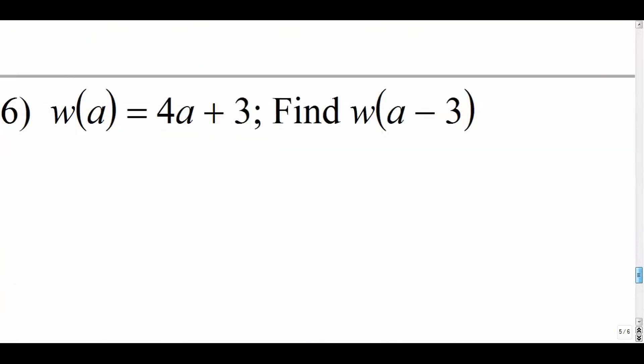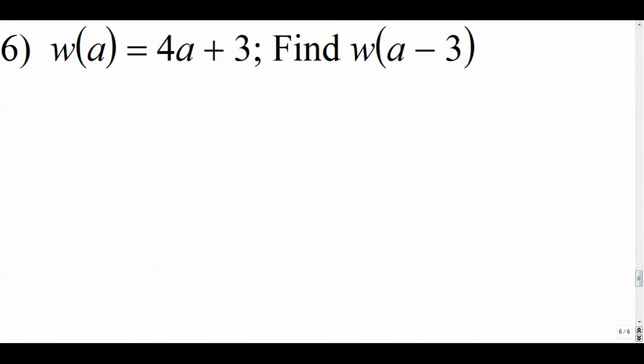Number 6, last one here. This time we're going to replace the a with a minus 3. Sort of abstract, but every time we see an a in our function, we're going to replace it and put in parentheses a minus 3. Again we're going to distribute: this 4 goes into this and multiplies, 4a minus 12 plus 3. So our answer here is 4a minus 9, and we're done.